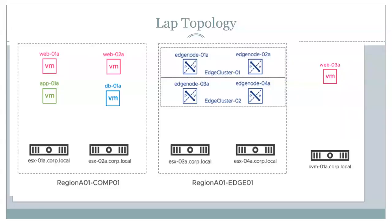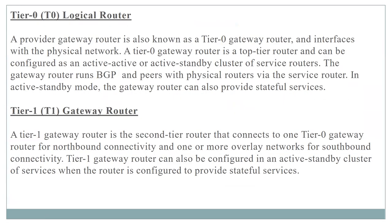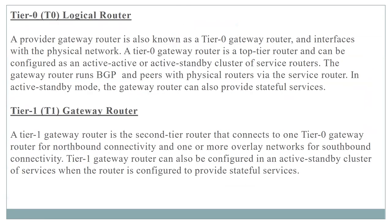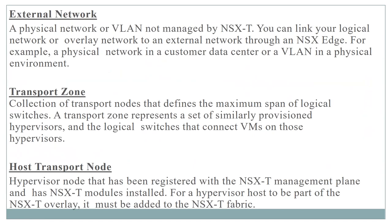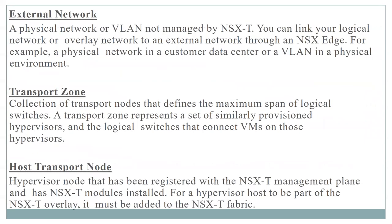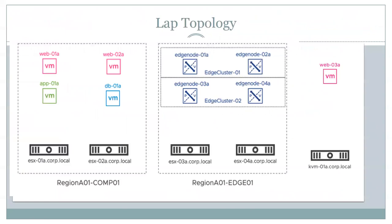From this video onwards, you can stitch together all the concepts discussed in our previous 20-minute video: where is your Tier-0, where is your Tier-1, what is your segment or logical switch, how they connect and communicate, where is your physical link, where are your transport nodes, host transport nodes, edge cluster, and where are your edges installed. You can correlate all of this from the lab in the upcoming sections.